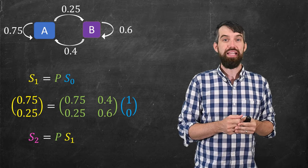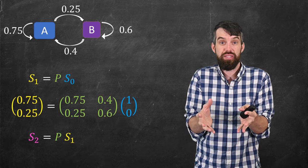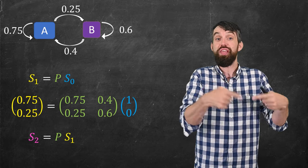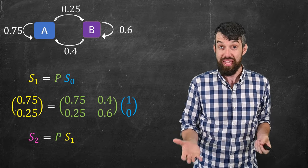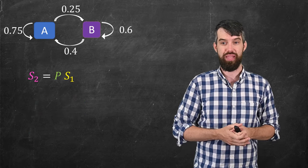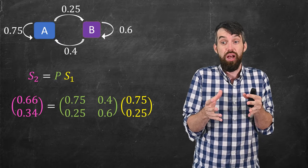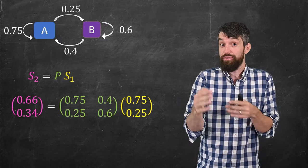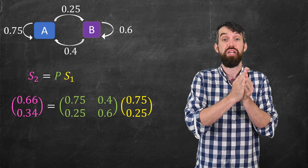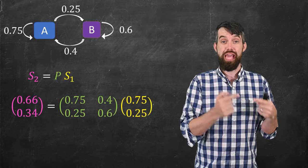The second state is, again, just take that transition matrix and multiply it now to the S1. In other words, I can go and take a look at this. This is going to be a new multiplication, that same transition matrix, but multiplied by 0.75, 0.25. And if you do that matrix vector multiplication, you get 0.66, 0.34 for the S2.